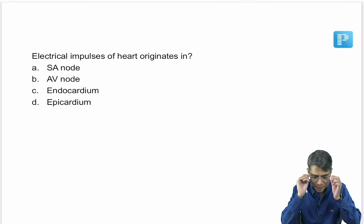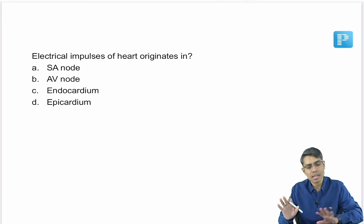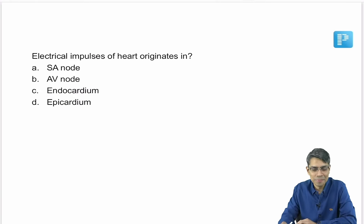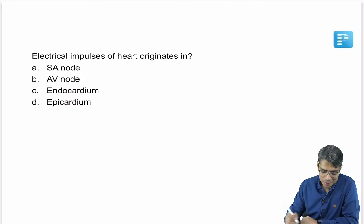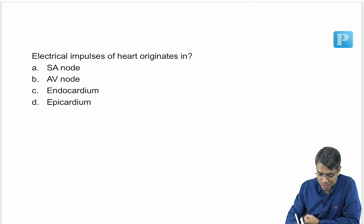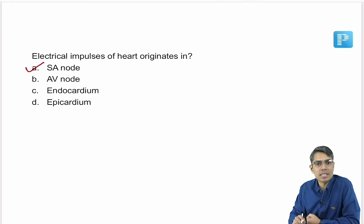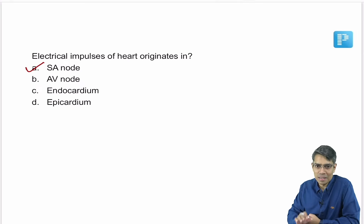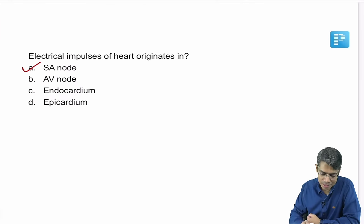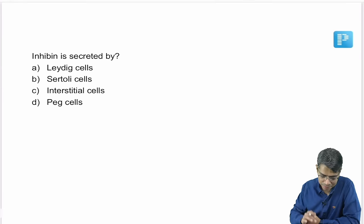Next question: electrical impulses of the heart originate in — direct answer is the SA node. Next question: inhibin is secreted by?